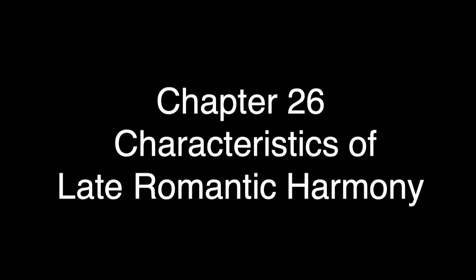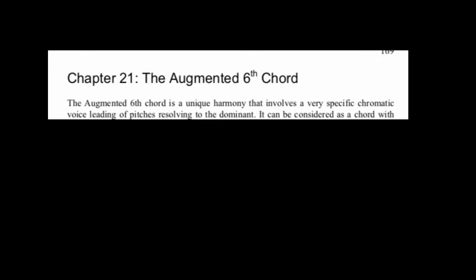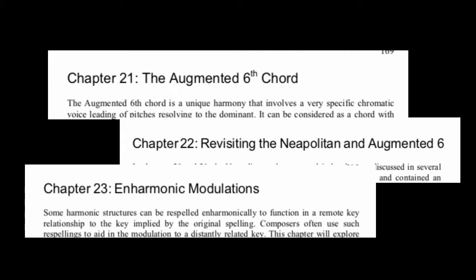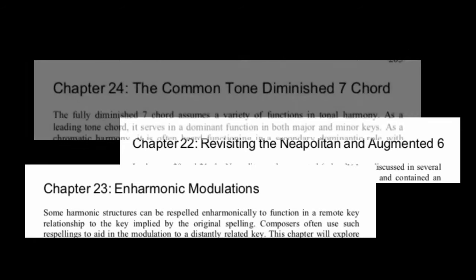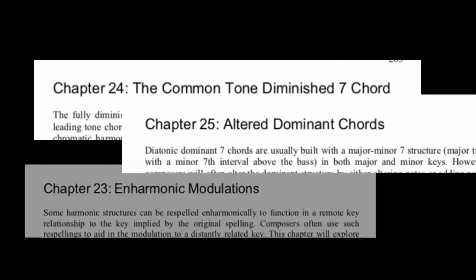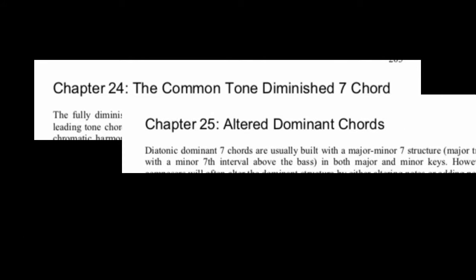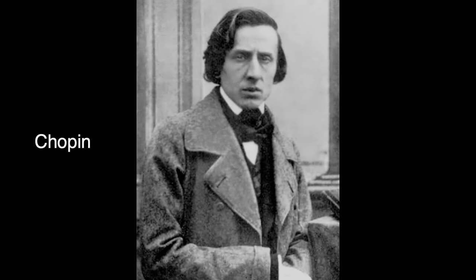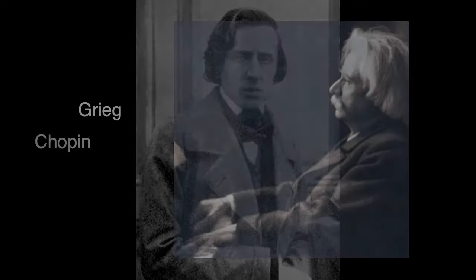Chapter 26: Characteristics of Late Romantic Harmony. The harmonic sonorities and contexts we have studied in the last several chapters were used to great effect by composers in the Romantic era in their quest for increasingly varied and profound chromaticism. As composers expanded the traditional forms and explored both literary and nationalistic influences, they became extraordinarily adventurous in their harmonic vocabulary.